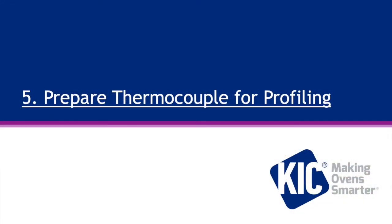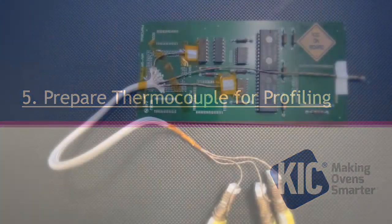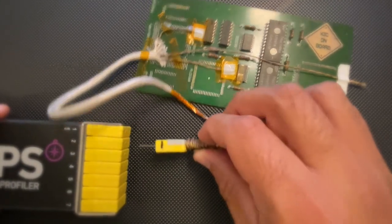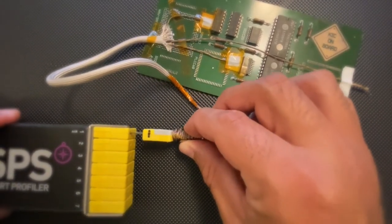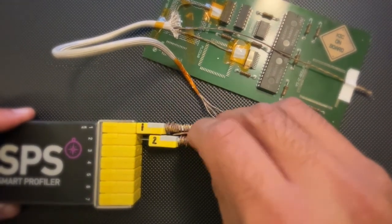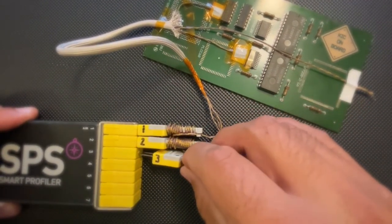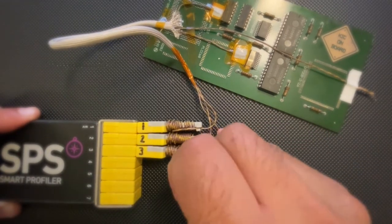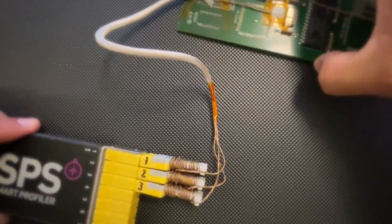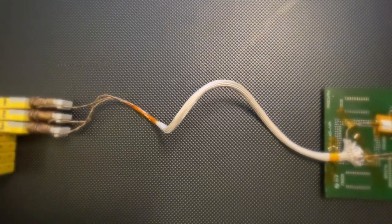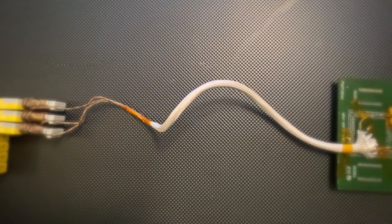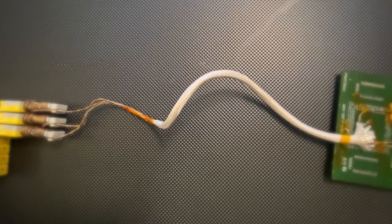Prepare thermocouples for profiling. Now attach the thermocouples to the profiler, starting with the RTC first. Remember which order you attached your thermocouples to the profiling board and attach them to the corresponding channel number of the profiler in that order. Make sure you leave enough wire length to provide 6 to 8 inches from the profile board to the profiler. You can use a high temp sleeve or Kapton tape to neatly tie up the thermocouple wires so they are not loose or can get caught on the oven surfaces while profiling.